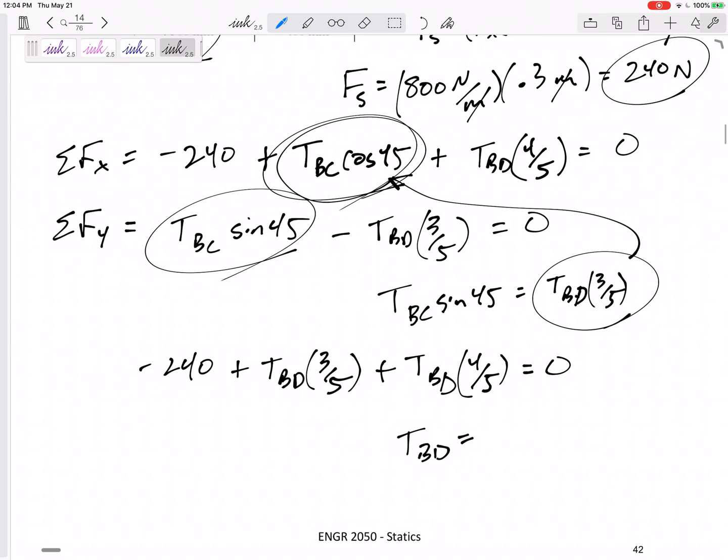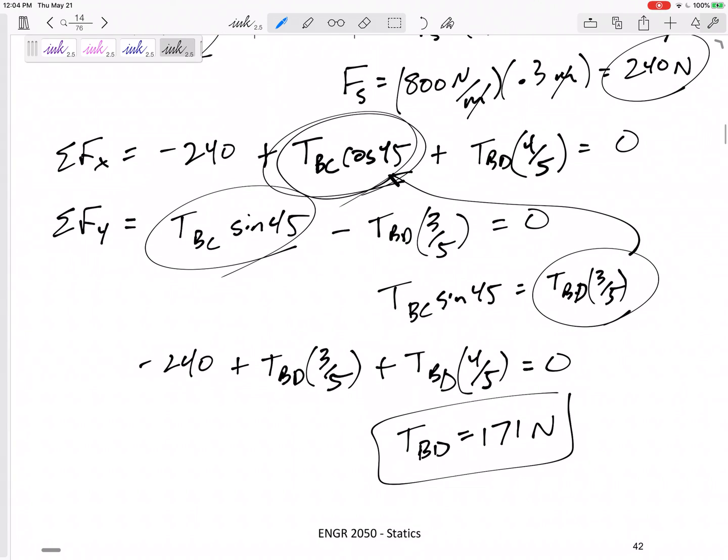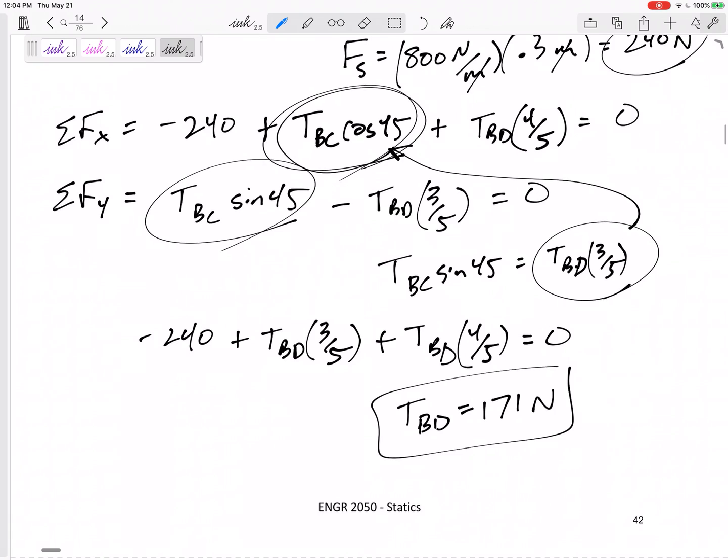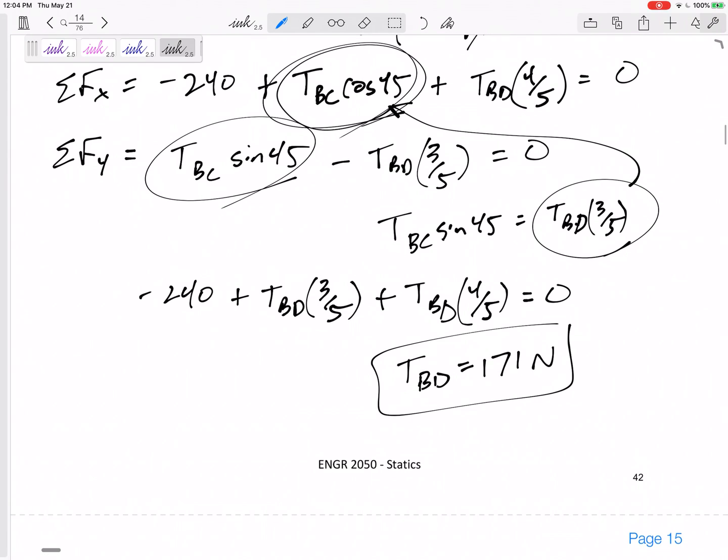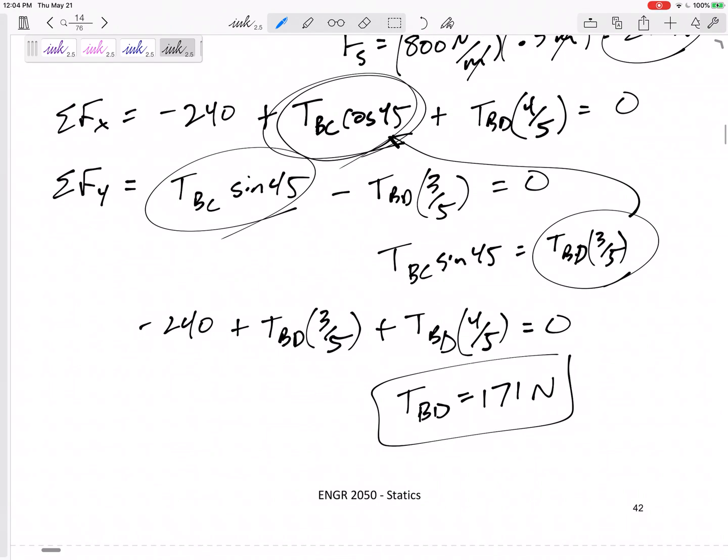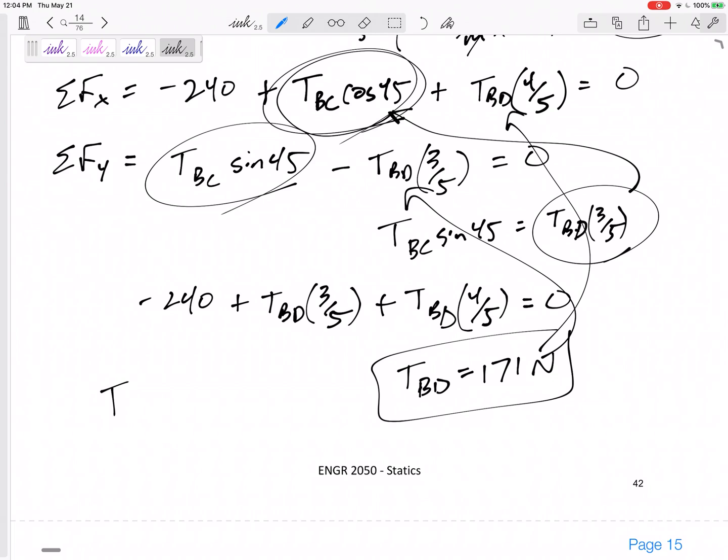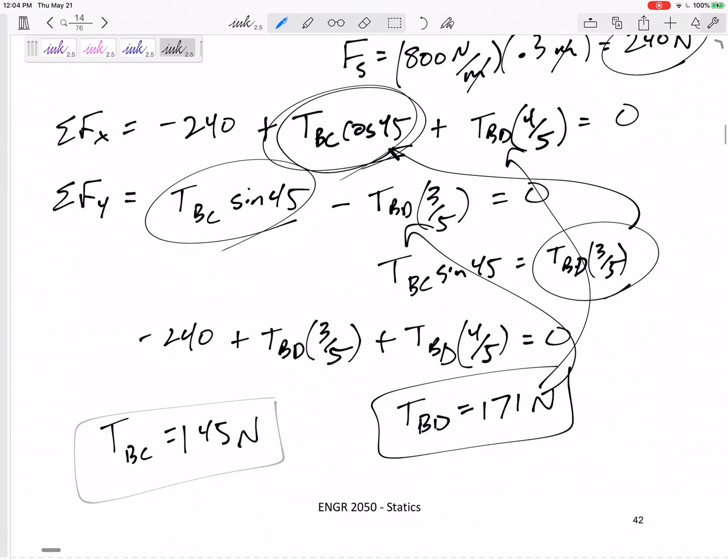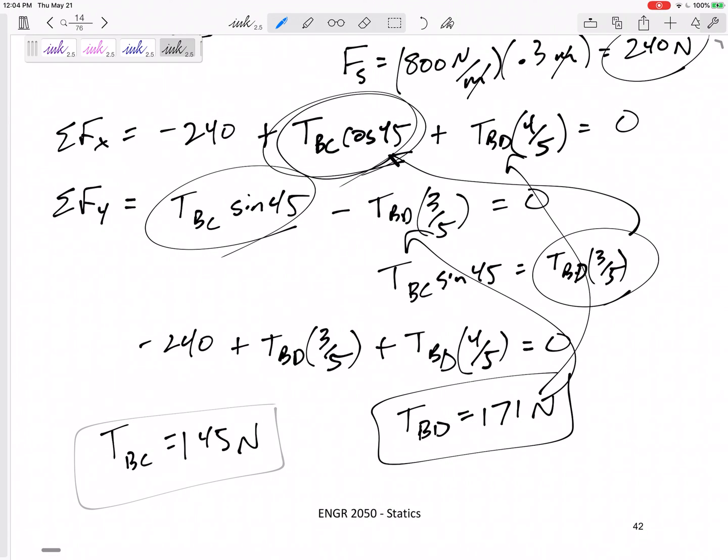And then I would get TBC is 145. Right, I would plug that back in right here. I could plug back into either of these equations and get TBC is 145 newtons. All right.